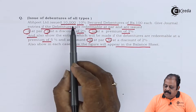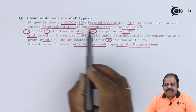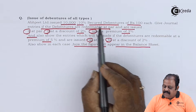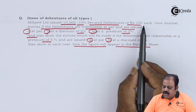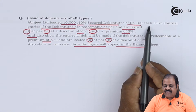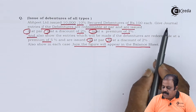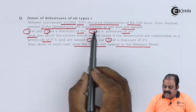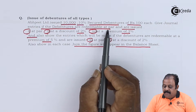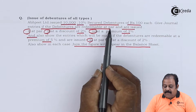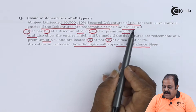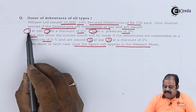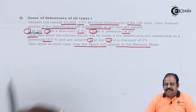Abhijit Ltd issued 10,000 10% secured debentures of Rs. 100 each. Give journal entries if debentures are redeemable at par and are issued first at par.